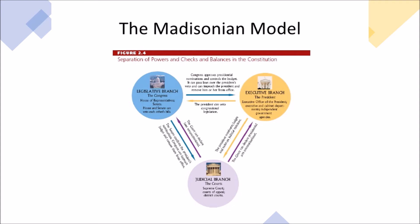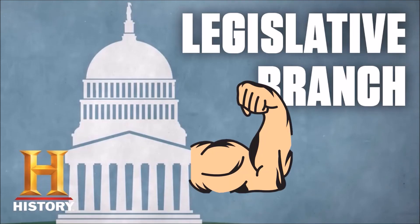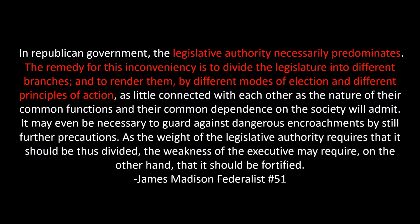However, after looking at those two images, one might get the misconception that each branch of government had equal influence and power — that each branch controlled one-third of the government. But that is not the case. Don't get tricked, because our founding fathers saw the legislative branch as the strongest. From this excerpt of Federalist 51, you can see them say, "The legislative authority necessarily predominates." And for that reason, they felt the legislative branch should be split, dealing with different issues and elected through different ways.